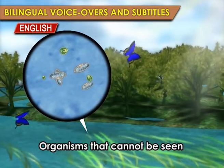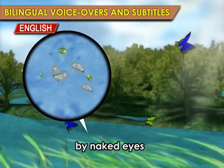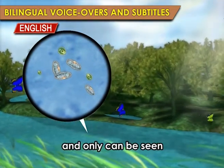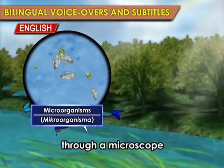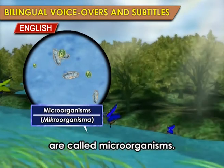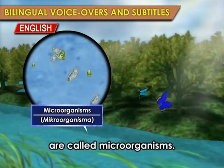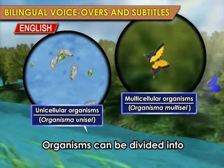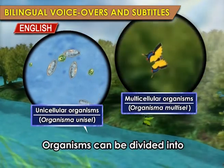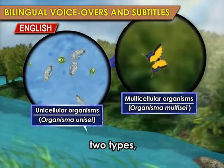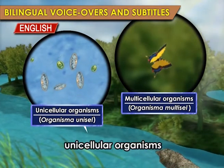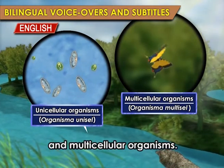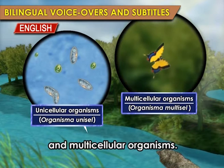Organisms that cannot be seen by naked eyes and only can be seen through a microscope are called microorganisms. Organisms can be divided into two types: unicellular organisms and multicellular organisms.